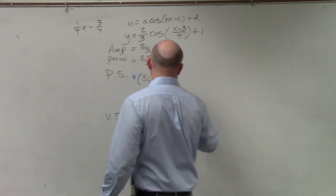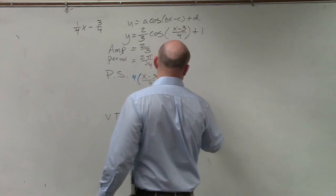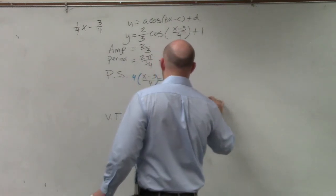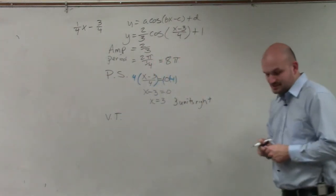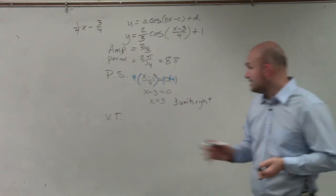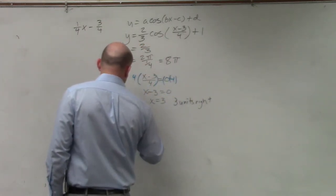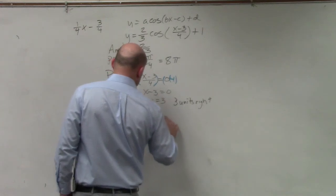So you could say 3 units right. Since x is solved for a positive, it's 3 units right. And then vertical translation is plus 1. So you could say up 1 unit.